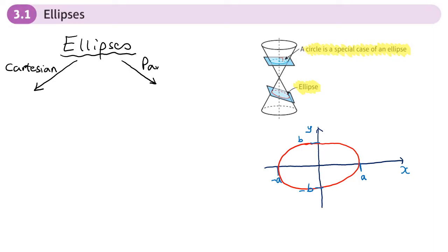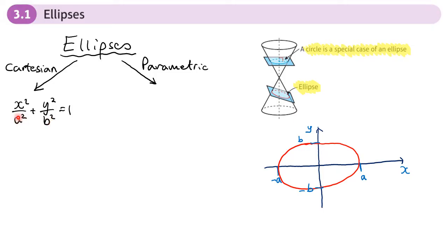Let's look at our different ways of showing what's going on. Starting with the Cartesian equation: the equation of an ellipse is in the form x squared over a squared plus y squared over b squared equals one. This looks similar to the equation of a circle with x squared and y squared. The letters a and b represent the same values as on the sketch, so we can work out where it crosses the x and y axes by finding the square root of the numbers on the bottom.